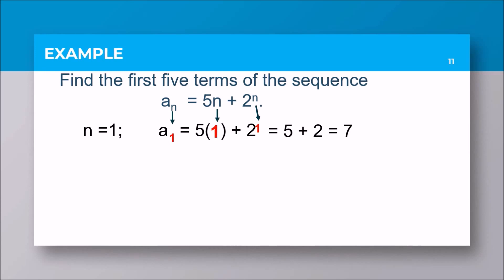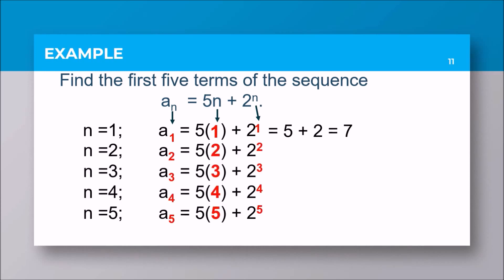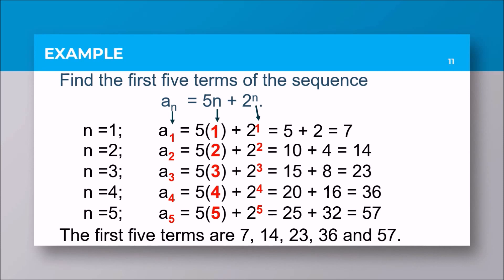Now it's your turn to perform a sub 2 up to a sub 5. Start plugging in. Pause the video and check your answer later. The answers are 14, 23, 36, and 57. So the first five terms are 7, 14, 23, 36, and 57.